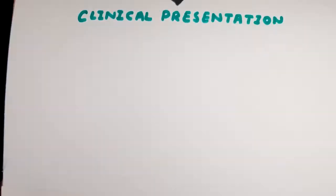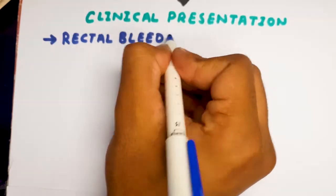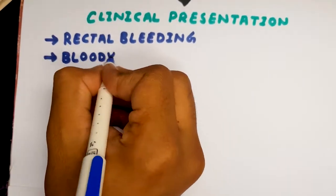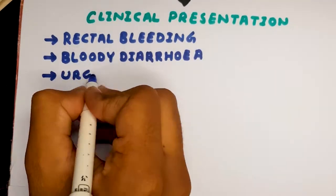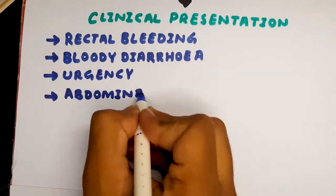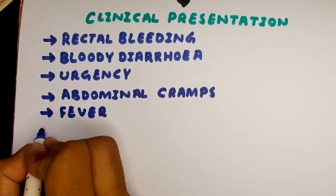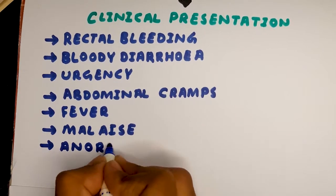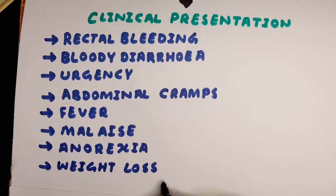How will the patient present in a clinical setting? They will have rectal bleeding, bloody diarrhea, urgency and abdominal cramps. They'll have general symptoms like fever, malaise, and anorexia, and they'll show weight loss.